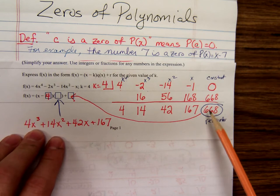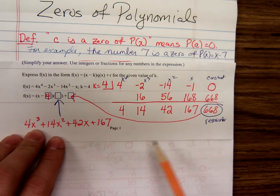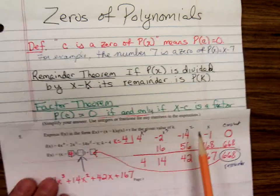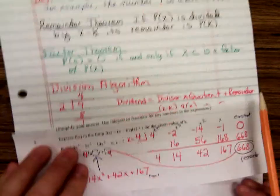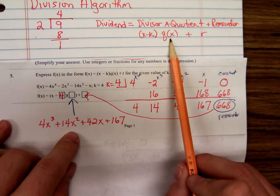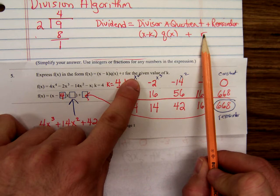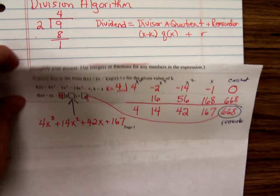Noticing that this last number is the remainder, so you go x minus k, that's the divisor. They're using q of x for the quotient plus the remainder. So we did a couple of problems like that.